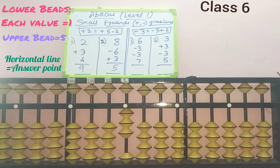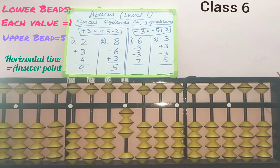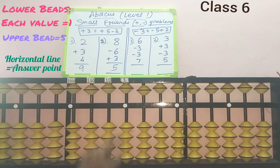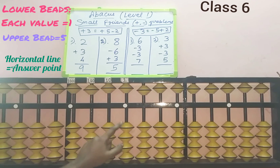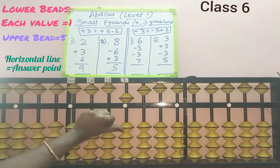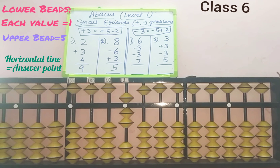Next, third row: again minus 3. We have to remove 3 beads from the answer point in the ones slot. Here 3 beads are added, so we can remove 3 directly: 1, 2, 3 — minus 3 completed. Last row: add 7 in the ones slot. Beads are available to add, so add 7 directly from the upper part: 5, 6, 7. Seven beads touch the answer point, so 7 is the answer for the first sum.